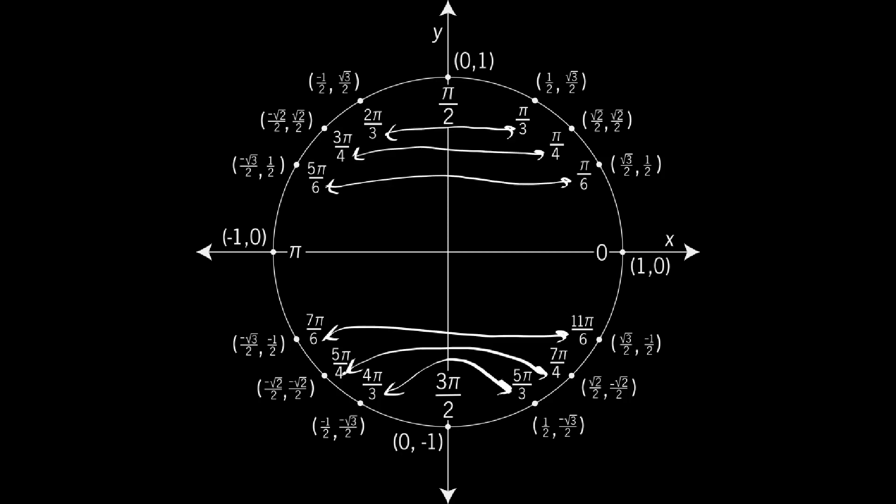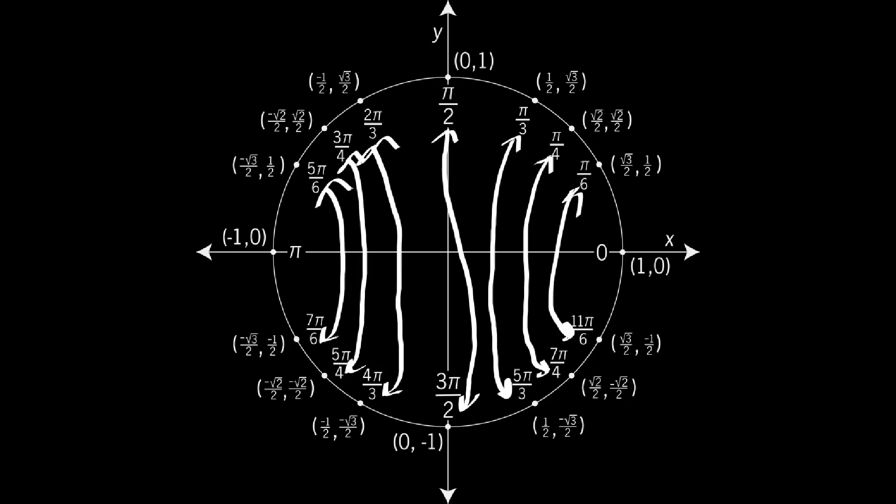You'll also notice that the denominators can be easily reflected across both the y- and x-axes. This makes it a lot easier to recreate these quickly if you simply have one of the quadrants, for example, the first quadrant.